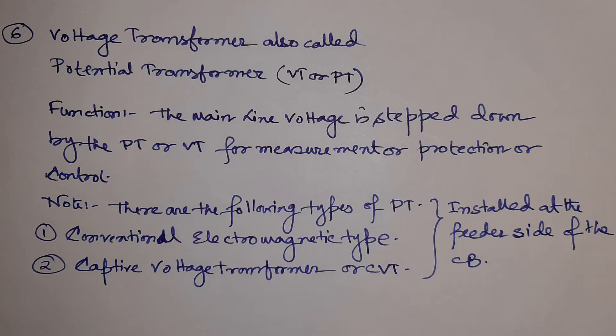In the previous video we discussed five substation equipment, so in this video we will start from number six: the voltage transformer, also known as potential transformer, VT or PT. Just like a current transformer, it is also an instrument transformer. It steps down the line-to-line voltage to a suitable voltage for relay or meters.